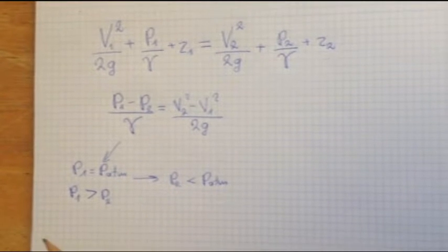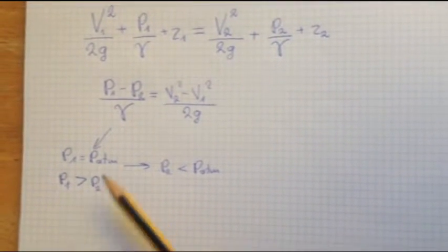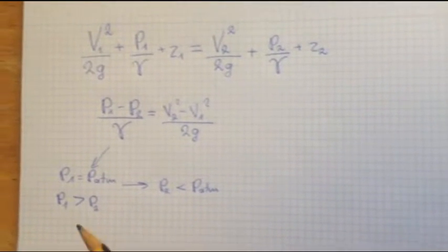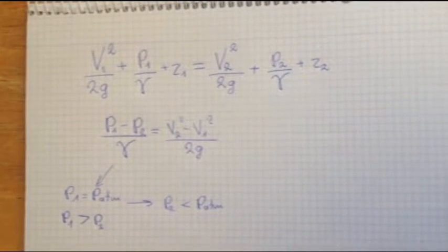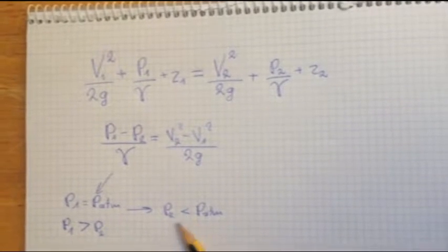For this reason, we have P1 equal to P atmosphere. P1, because of the speed, is higher than P2. So as you can see, pressure 2 is less than the pressure of the atmosphere.